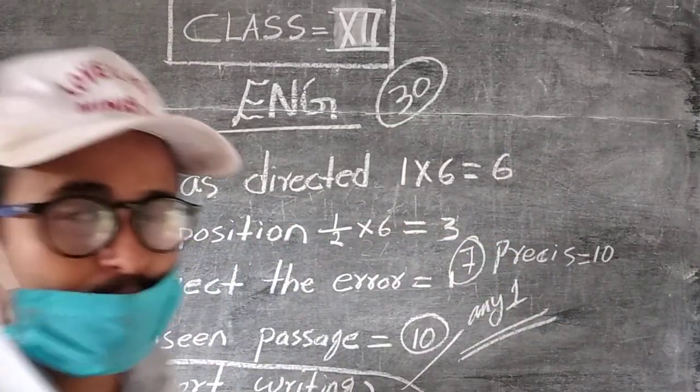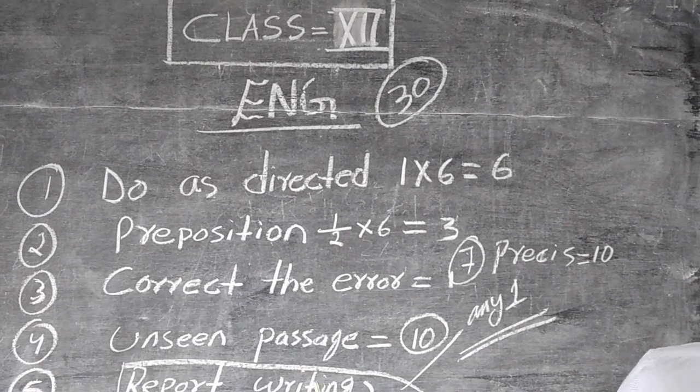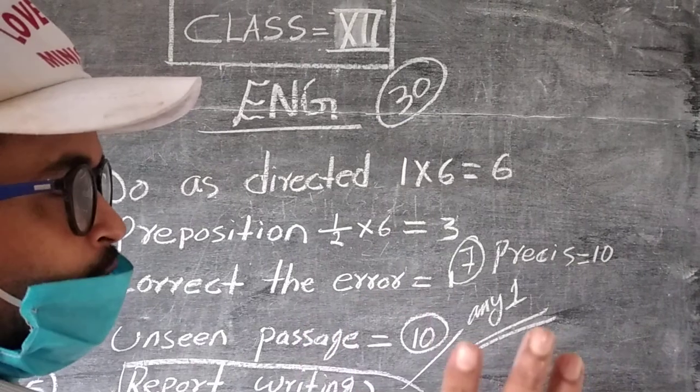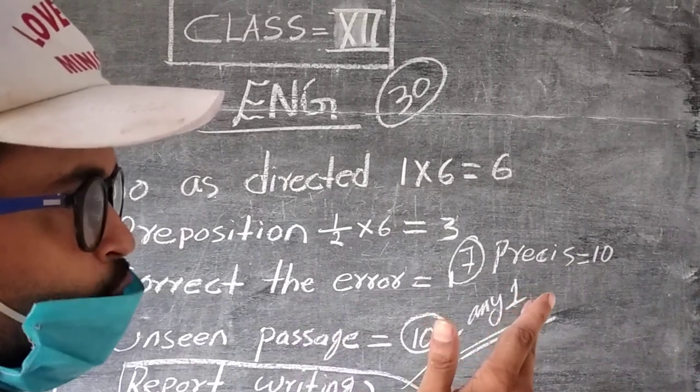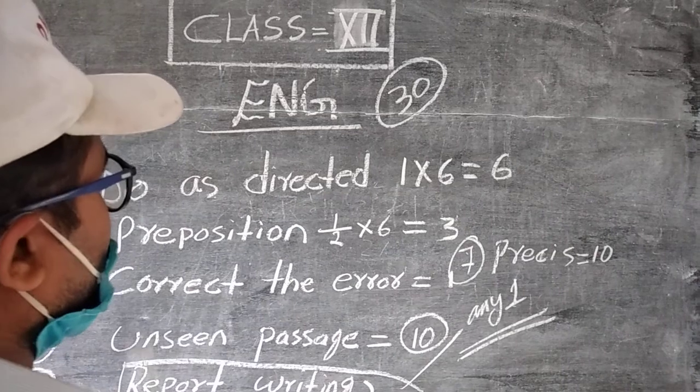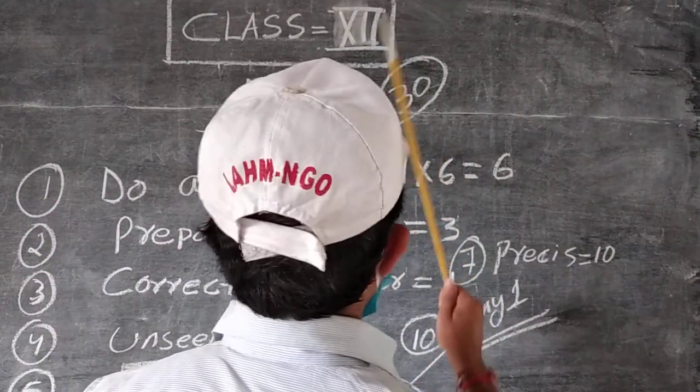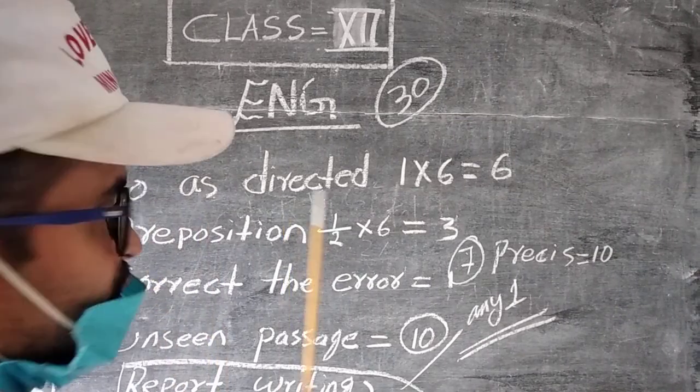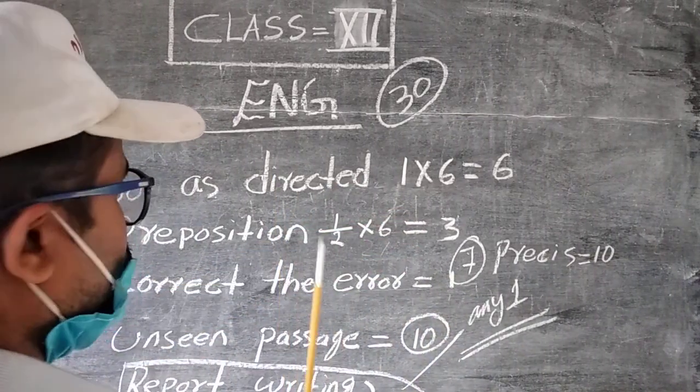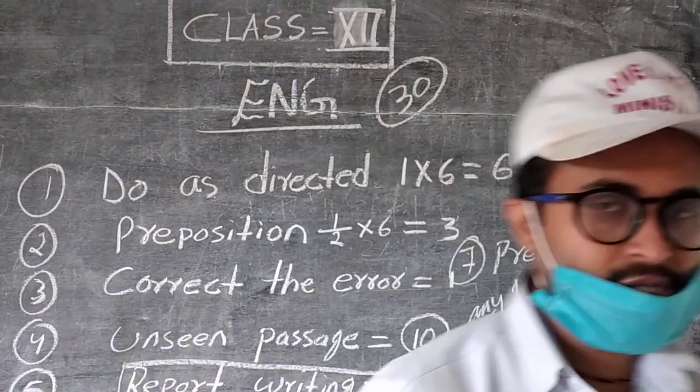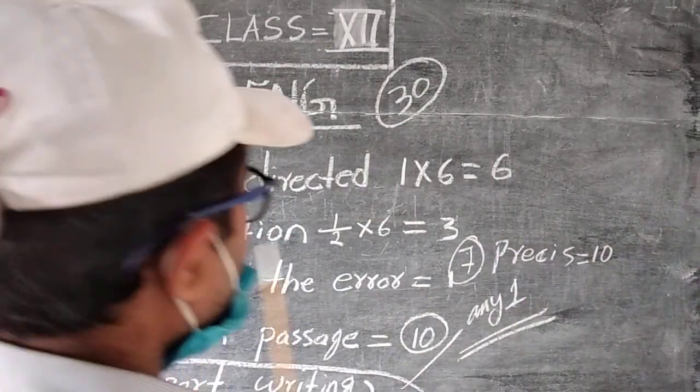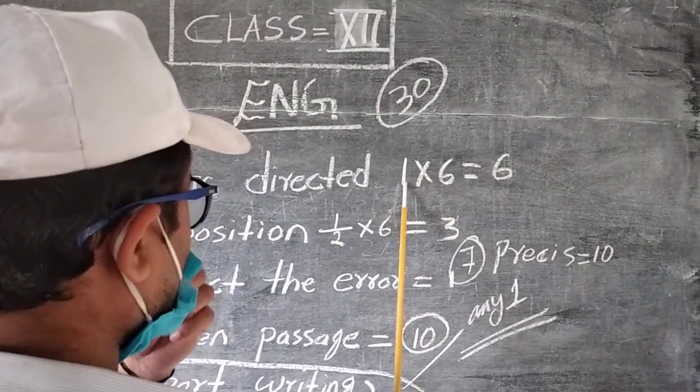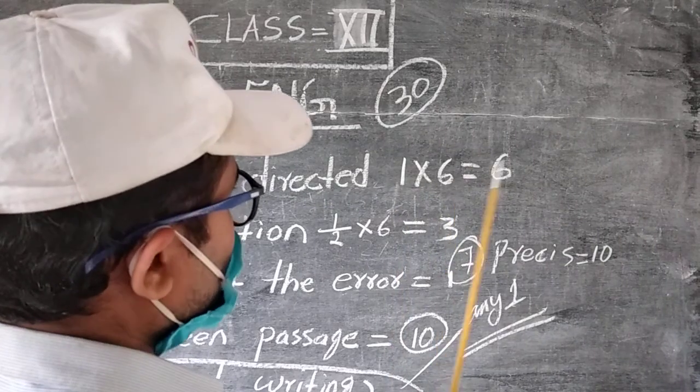Now let's see: full marks will be 80. 50 will be asked from prose and poetry, and 30 will be grammar questions. First they will ask you do as directed, which we are going to do in our next class. I will show you the rules and formulas. That will be total 6 questions and each question carries 1 mark, so total 6 marks.